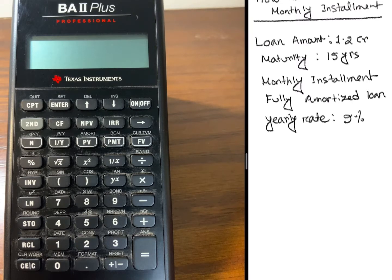Take for an example, you are taking a home loan of 1.2 crore taka and the maturity of the loan is 15 years and you have to pay monthly installment. The loan is fully amortized and the yearly rate is 9%. So how to calculate the monthly installment using the Texas Instrument BA2 Plus Professional Calculator?